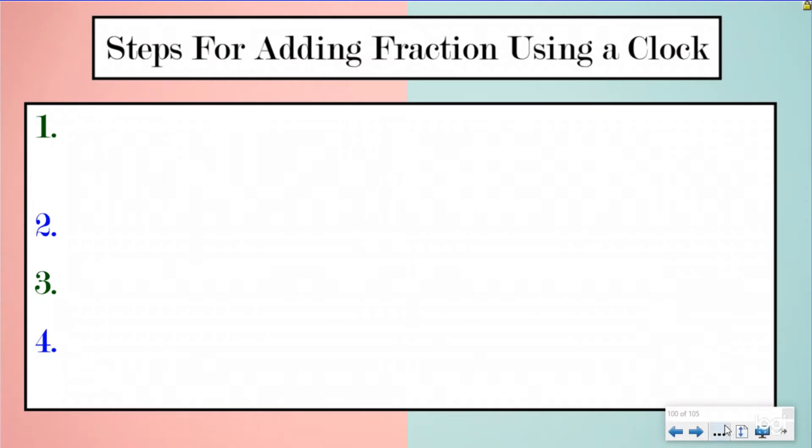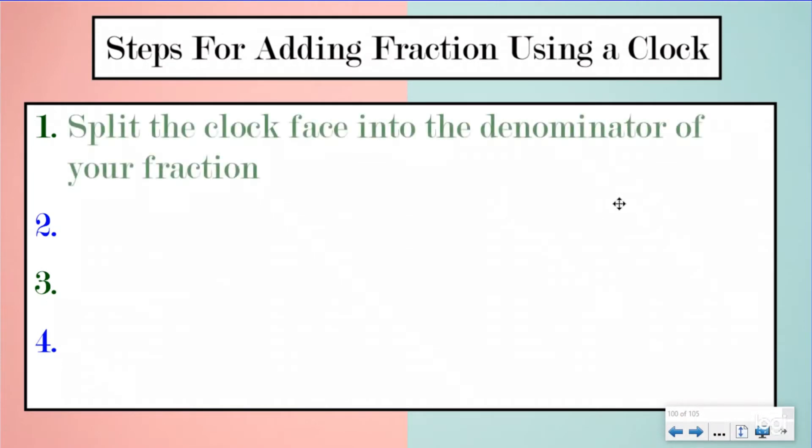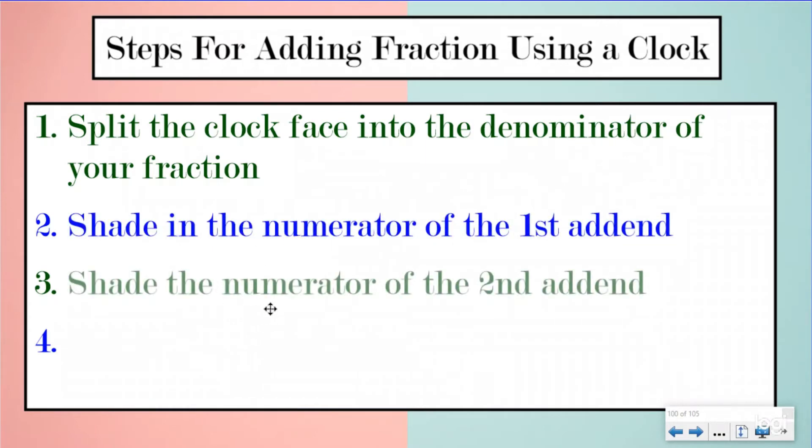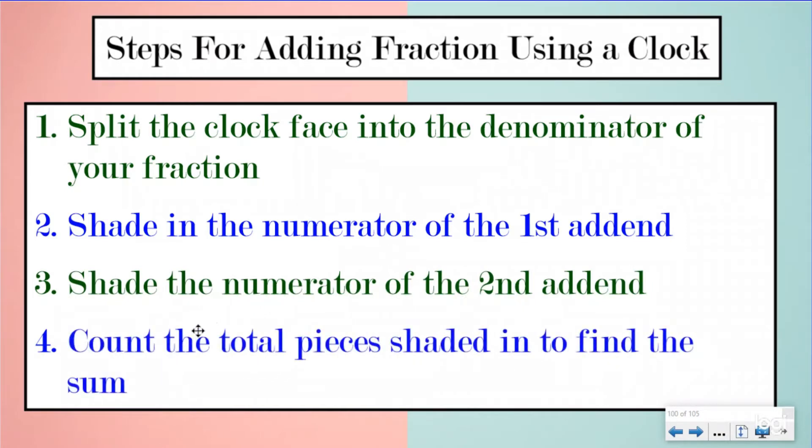And as always, we have our steps. Our first step is you need to split the clock face into the denominator of your fraction. Step number two, you're going to shade in the numerator of the first addend. Step number three, you're going to shade the numerator of the second addend. And then step number four, you're going to count the total pieces shaded in to find the sum.